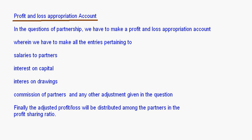Next is the Profit and Loss Appropriation Account, a very important account in this lesson. It is basically used to calculate the adjusted profit. Adjustments such as salaries to partners, interest on capital, interest on drawings, and other items are provided for, and then the adjusted profit or loss is calculated. The net profit from the P&L account is taken, adjustments are made, and the resulting profit or loss is distributed among partners in their profit sharing ratio.